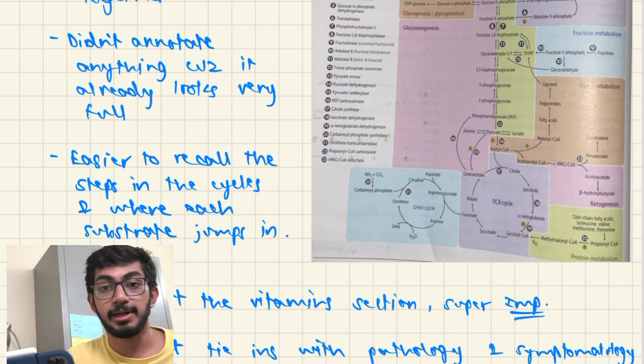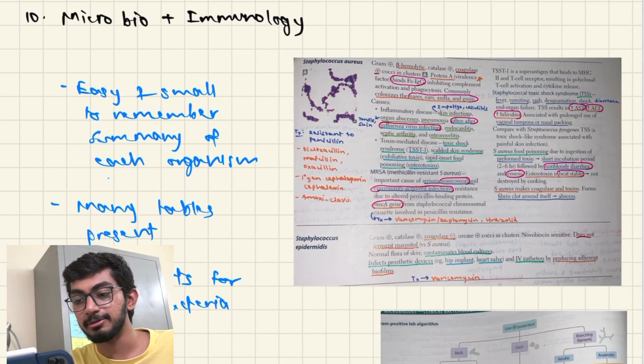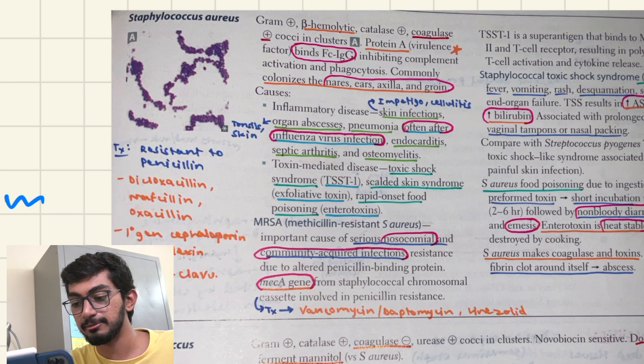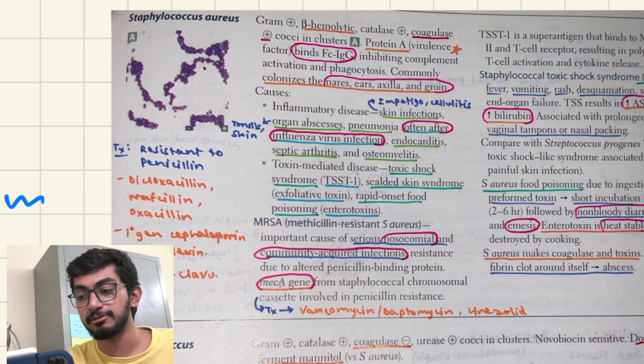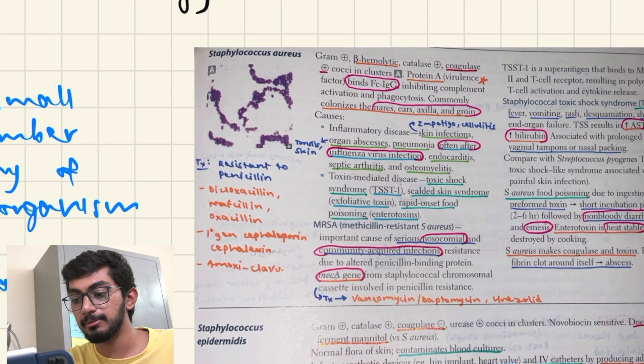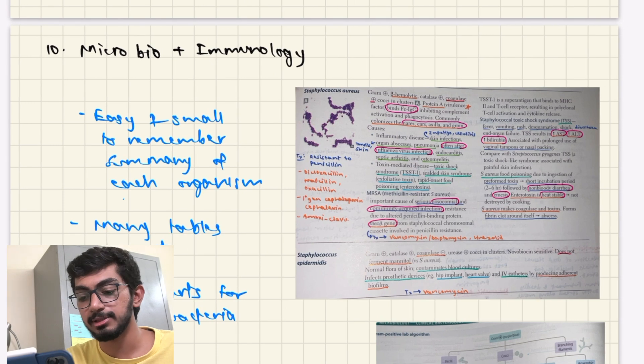Next we move on to Microbiology and Immunology. You can see how they've given each bacteria. I've added the treatment part and I've highlighted some of the important things that are mentioned here. Like the protein A virulence factor of the Staphylococcus aureus binds to the Fc region of IgG. And yeah, so I think this is an easy way to revise all the bacteria and the different microbes that are present.